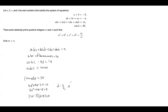We can try out each value of d to see what works. First, we're going to try d equals negative 5. Then abc equals 14 plus 4 times negative 5, which equals negative 6.